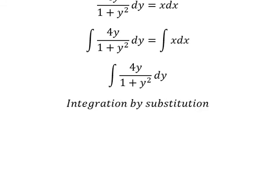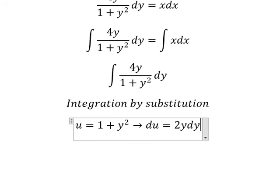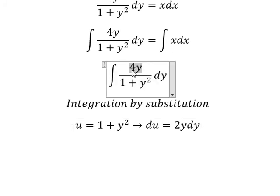I will put u equals 1 plus y squared. Then du equals 2y dy. If we look carefully, we have 4y, so we can put 2 multiplied by 2y.